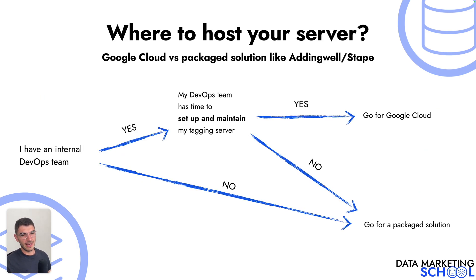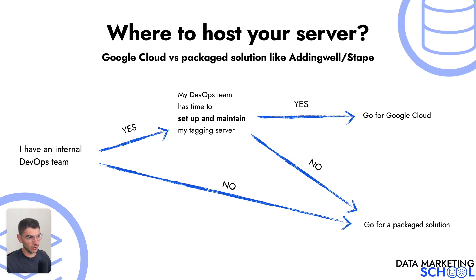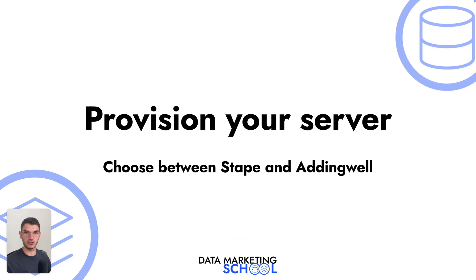To implement a server-side architecture, you will need to host a server on either Google Cloud or a package solution like AddingWell or Stape. If you have an internal DevOps team with time to set up and maintain your tagging server, you can go for Google Cloud. If you answered no to the first two steps, you should go for a package solution like AddingWell or Stape. In this video, I'm going to show you how to provision your server with AddingWell and Stape and how to choose between these two platforms.